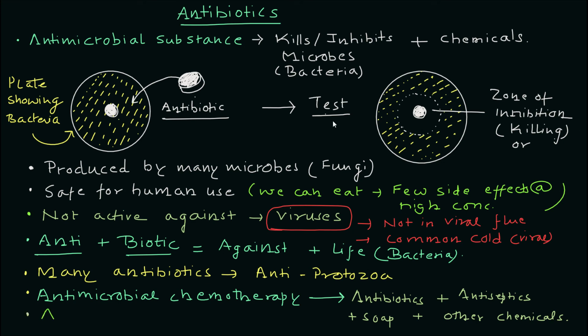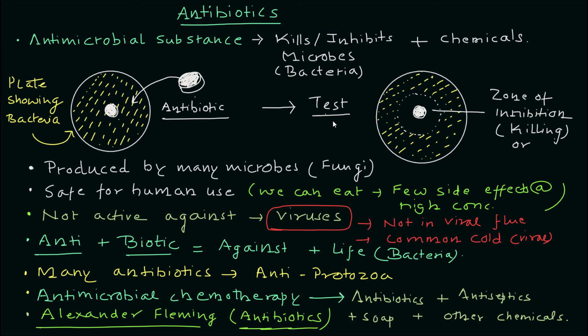It's also important to know that Alexander Fleming was the one who discovered antibiotics. These are some of the important terms we need to remember, and we need to understand how antibiotics are tested, how they show activity against other organisms, and why they are important. I hope the video was helpful for you to understand antibiotics, and I'll bring more videos to help you understand antibiotics in more detail. I'll meet you in the next video — till then, take care.